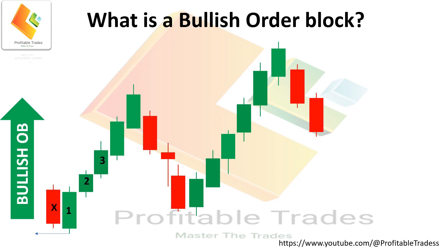Take candle one, candle two, and candle three. In order to find a bullish fair value gap, there must be a gap or price difference between the high of candle one and the low of candle three. Draw the horizontal lines from the high of candle one and the low of candle three — there you see a price gap. Rule number one and rule number two are both applied. Now draw a bullish order block at candle one.